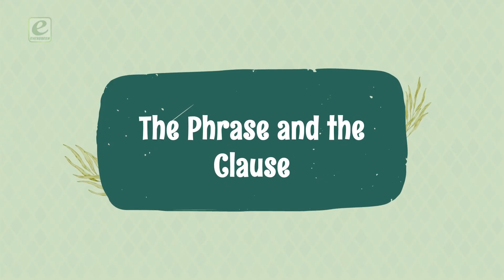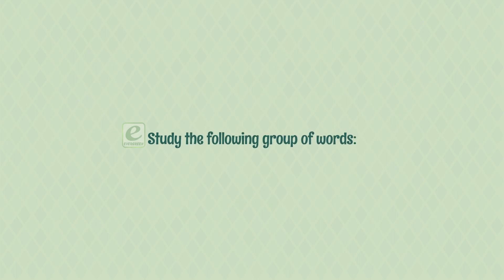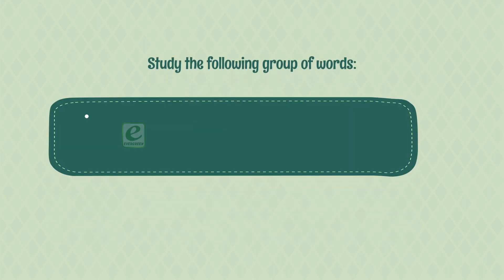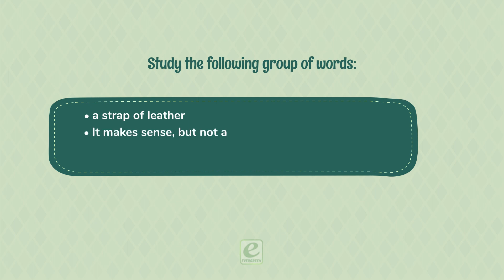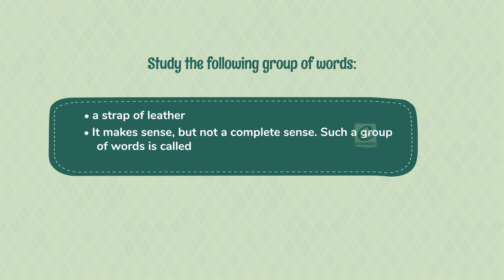The phrase and the clause. Study the following group of words: 'A strap of leather.' It makes sense but not complete sense. Such a group of words is called a phrase. It has no subject and no predicate.